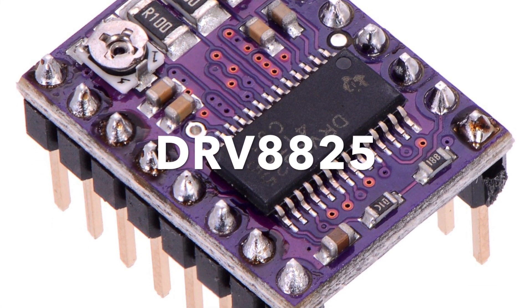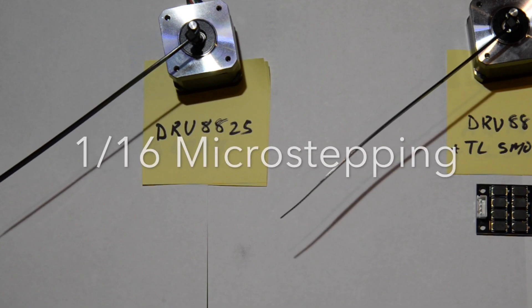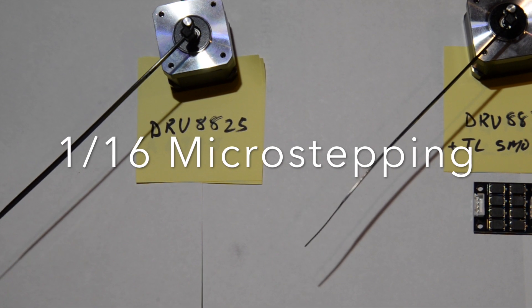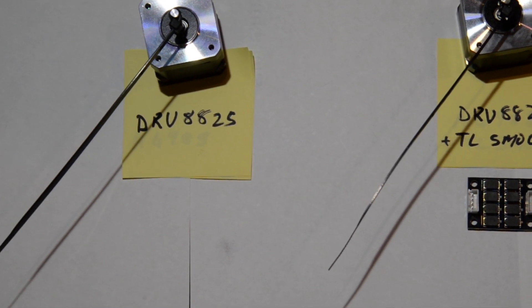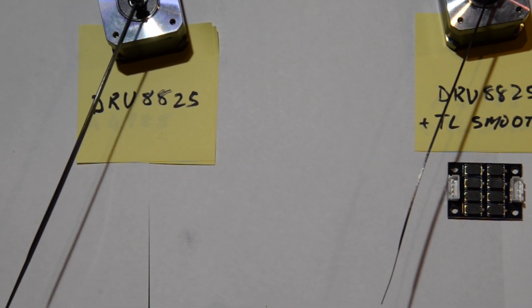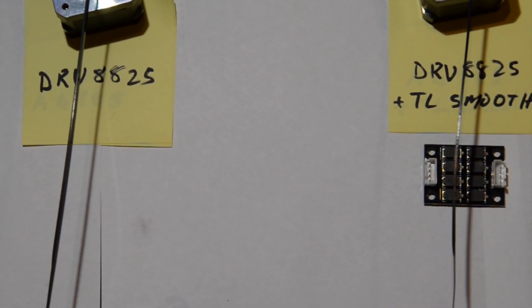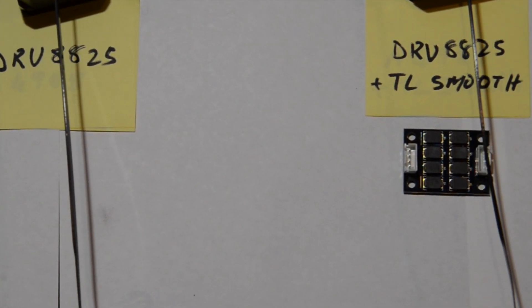Next I hooked up the DRV8825s. They normally come in purple. I started with 1/16th microstepping again, and here you can see a clear difference between the stepper on the left without TL Smoothers and the one on the right with an 8-diode TL Smoother. It's jumping like the second hand on a clock.